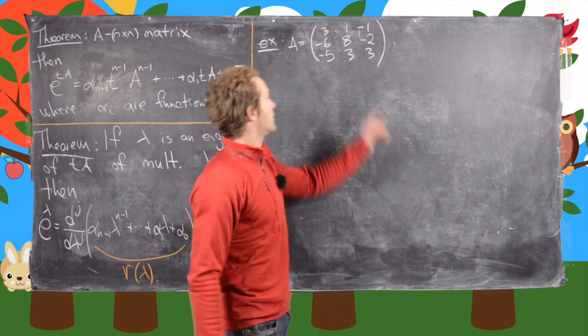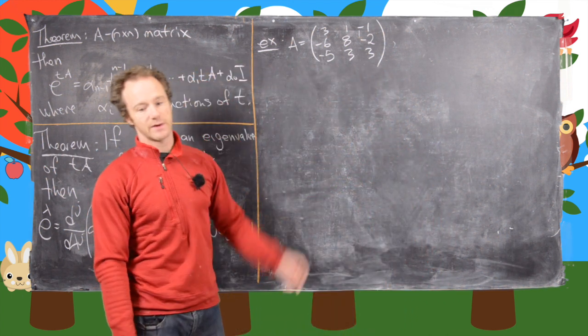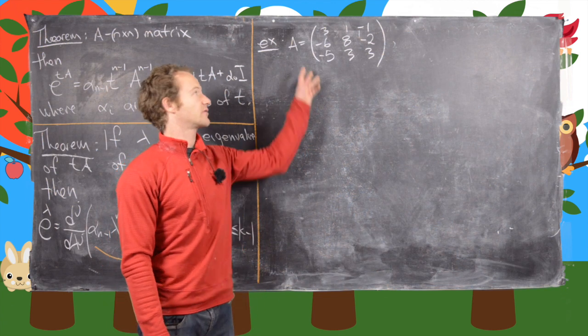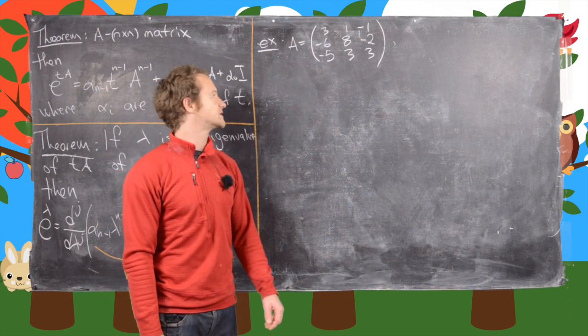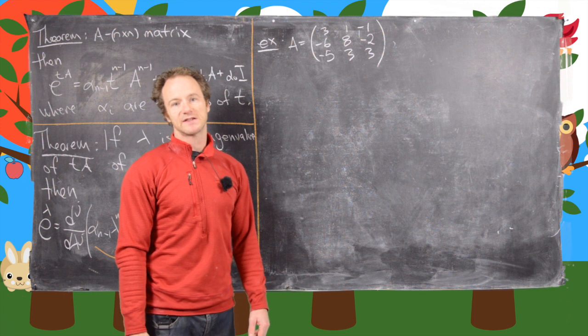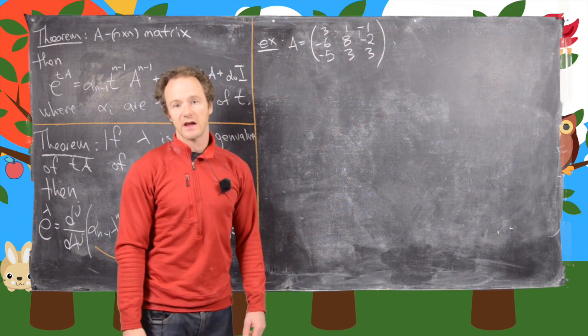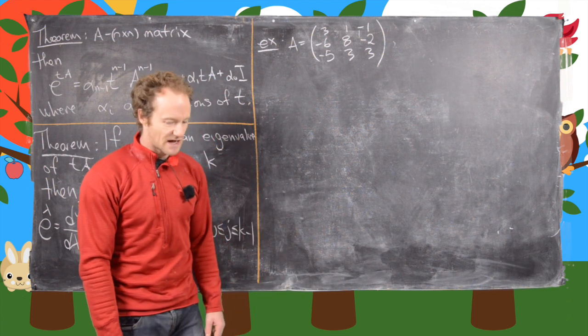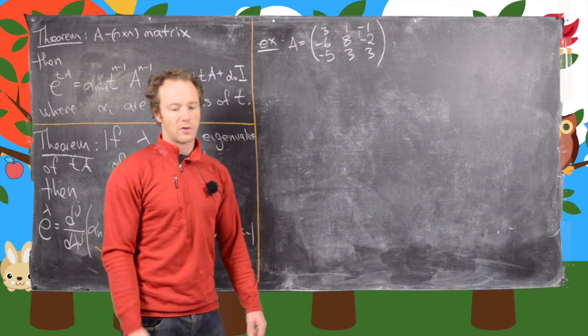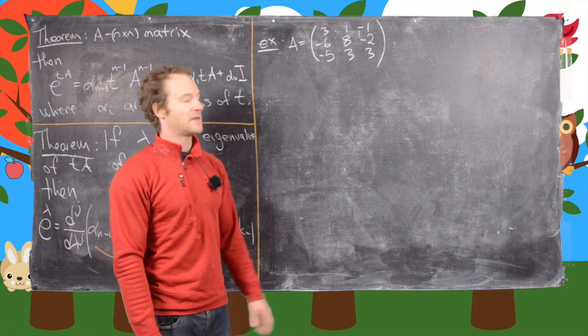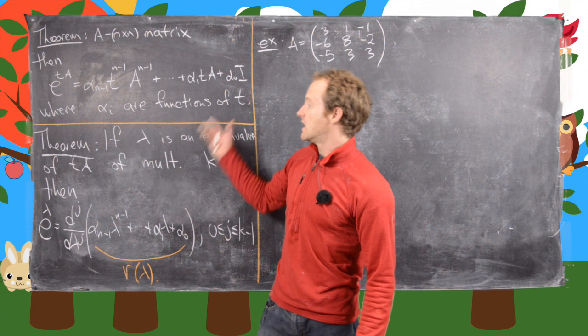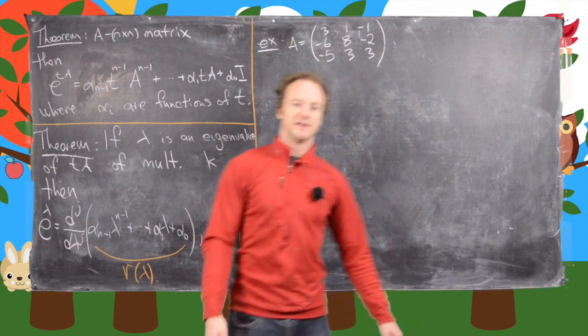Okay, so in this video we want to look at this following example. So we have this 3 by 3 matrix: [3, 1, -1; -6, 8, -2; -5, 3, 3]. And we're going to skip some of the steps involving just normal routine calculations, but that being said, we're going to do everything that's kind of new outlined by these theorems.